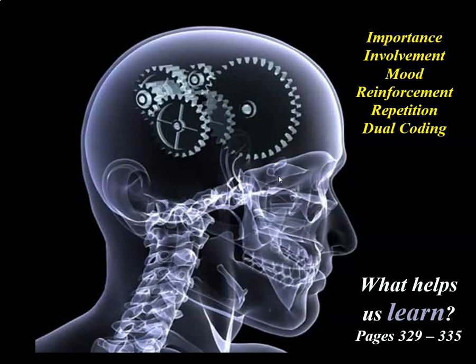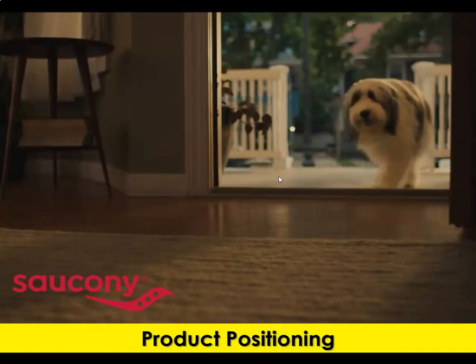We use all of this to help us with the concept of product positioning. I'd like to share an example from Saucony, the athletic shoe manufacturer. They're trying to use everything associated with memory and how consumers learn to position their product in a very specific way. This ad was debuted in late August and happened to coincide with National Dog Day. Many advertisers use animals as props, but here the animal is very useful in the specific positioning of the Saucony shoe.